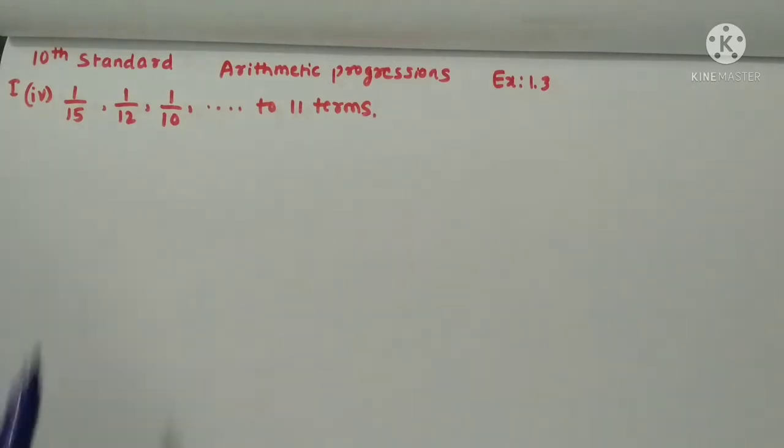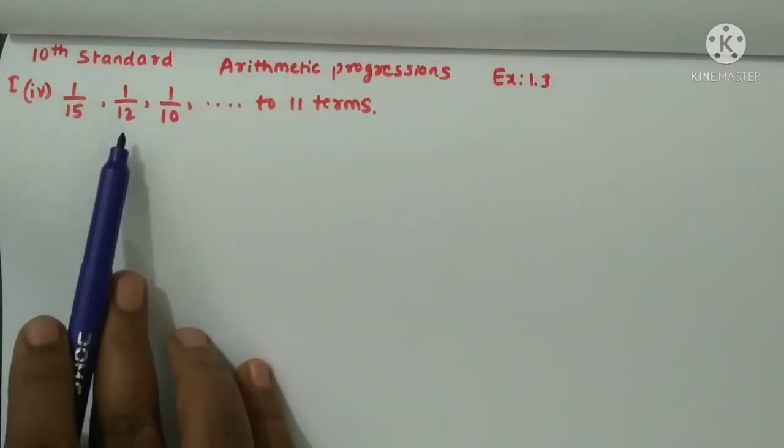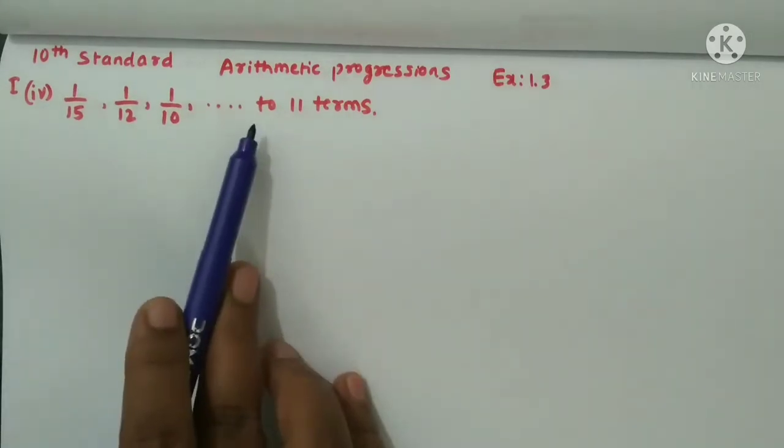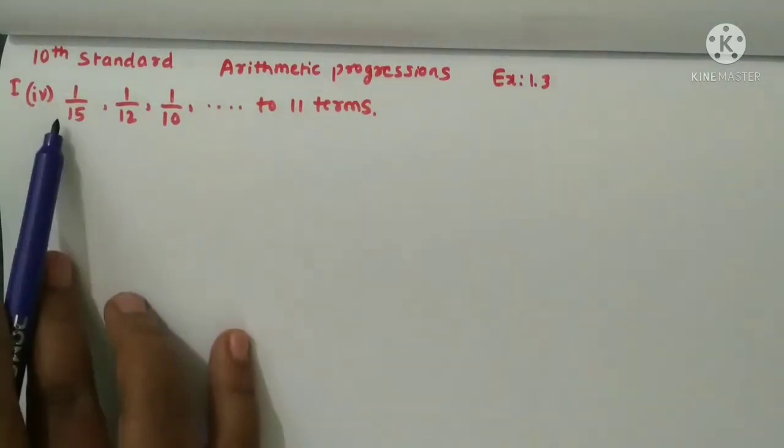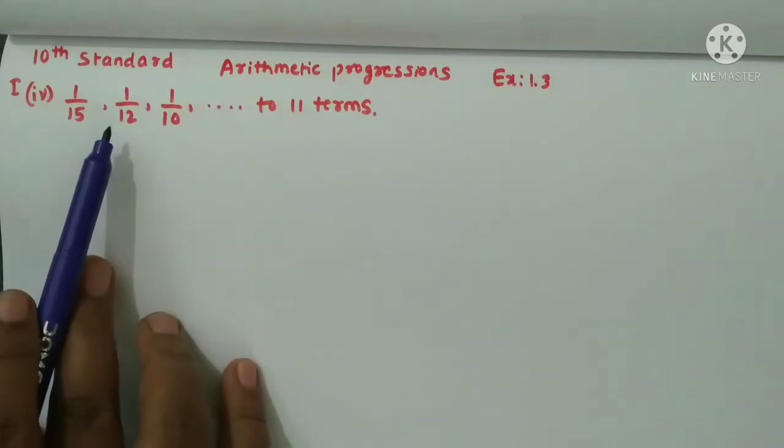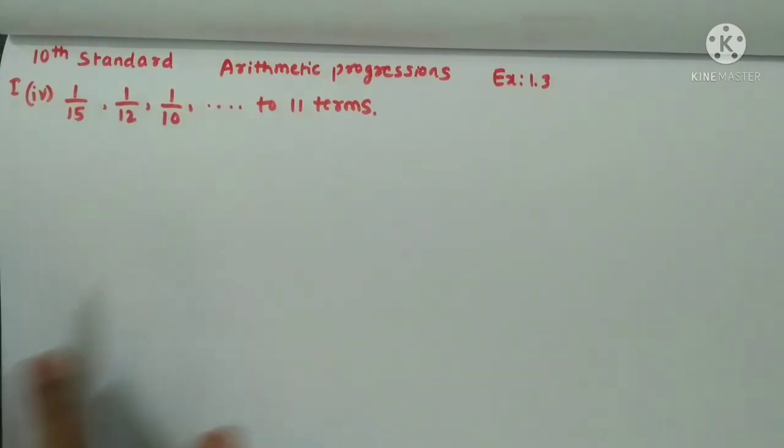The sum is 1 by 15, 1 by 12, 1 by 10. You have to find the sum of the 11 terms. Here a value is 1 by 15, second term is 1 by 12, third term is 1 by 10.